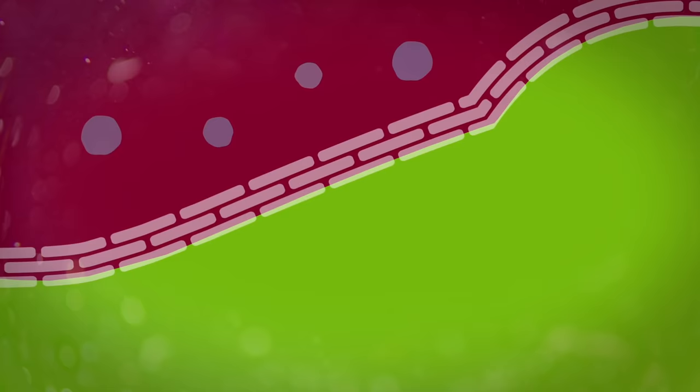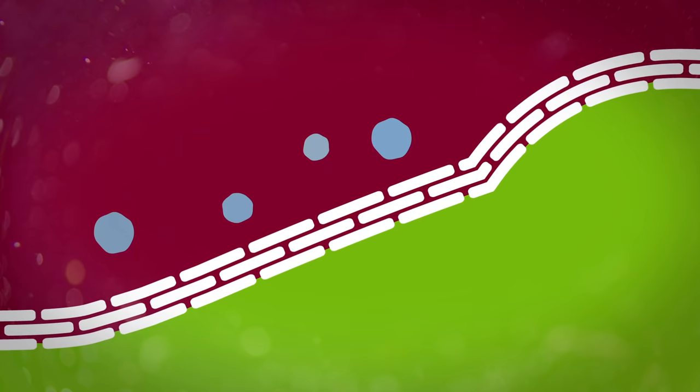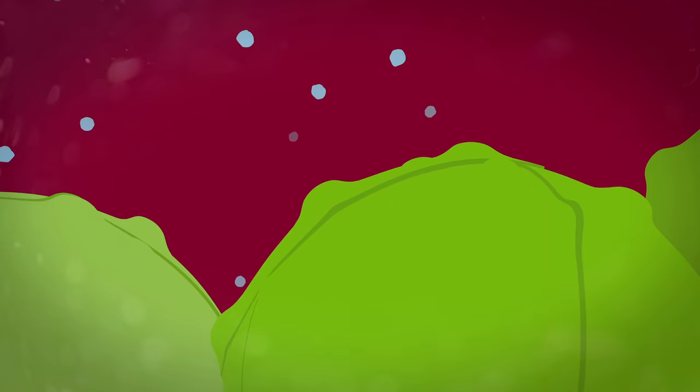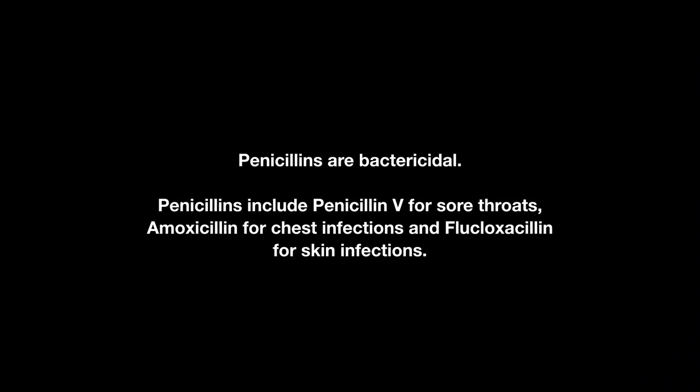Bactericidal antibiotics kill the bacteria, for example by preventing the bacteria from making a cell wall. Penicillins are bactericidal. Penicillins include penicillin V for sore throats, amoxicillin for chest infections, and flucloxacillin for skin infections.